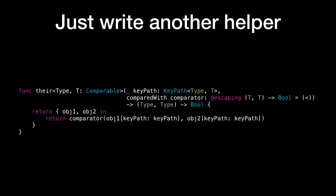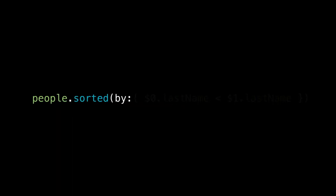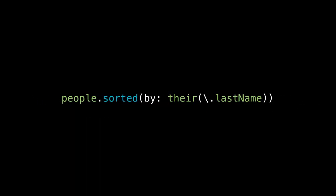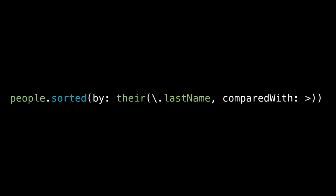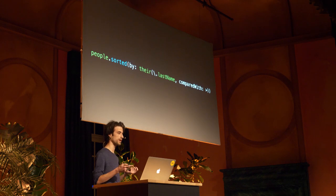With this, we're now able to turn the verbose closure-based code into something that reads like very good English: people sorted by their last name — with just enough punctuation to make it legitimate computer syntax. And if you want to go even fancier, you can provide a custom comparison operator, and the syntax is still very nice: people sorted by their last name, compared with strictly greater than.